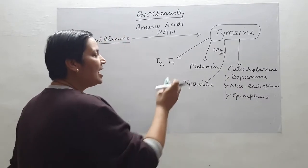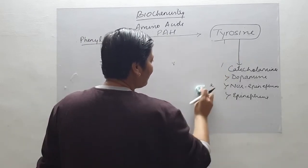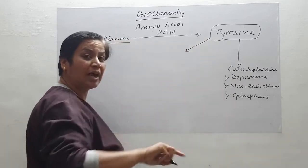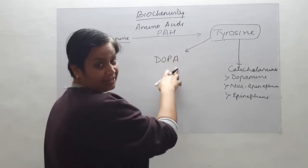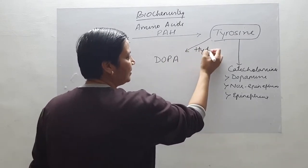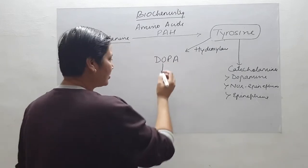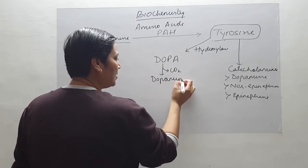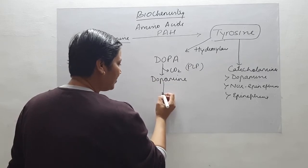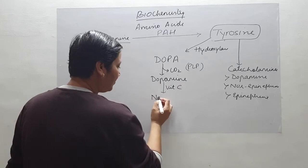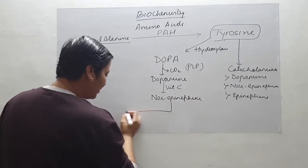Now we will discuss how tyrosine is converted to form catecholamines one by one. Tyrosine undergoes one more hydroxylation forming DOPA — dihydroxyphenylalanine — and the enzyme is tyrosine hydroxylase. Once DOPA is produced, it undergoes decarboxylation forming dopamine. Decarboxylation always requires PLP. This dopamine will then, in the presence of vitamin C, form norepinephrine — the first catecholamine synthesized. Norepinephrine will then be converted into epinephrine.